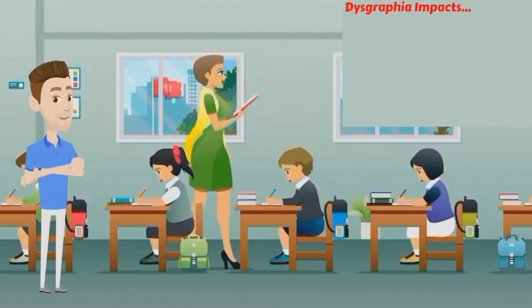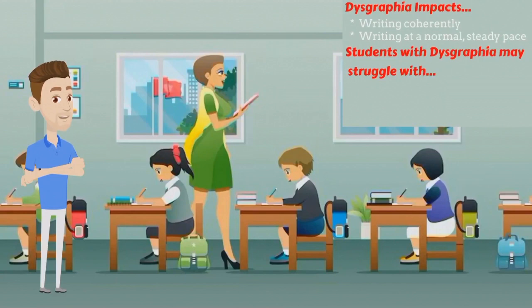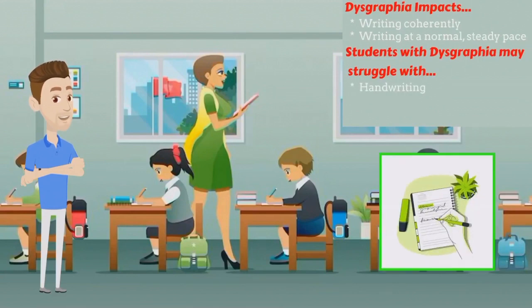Dysgraphia is a learning disability that affects a student's ability to write coherently and efficiently. People with dysgraphia may struggle with handwriting, spelling and organising their thoughts on paper.